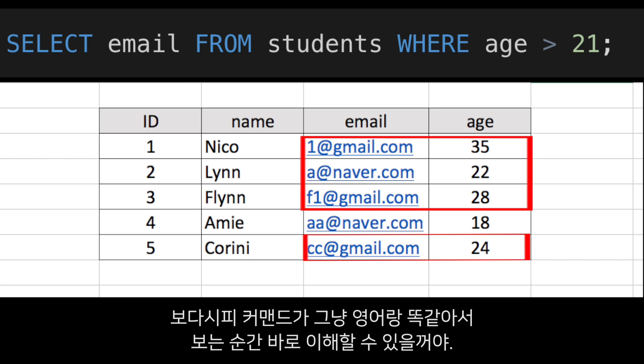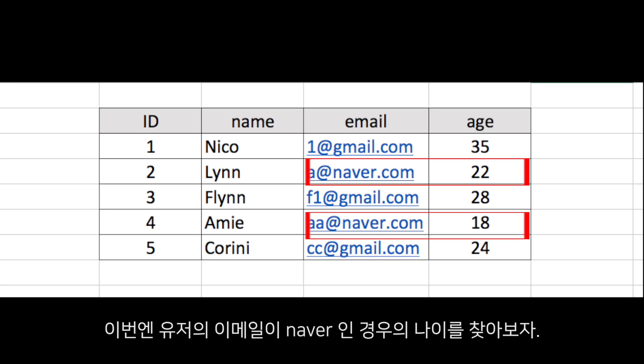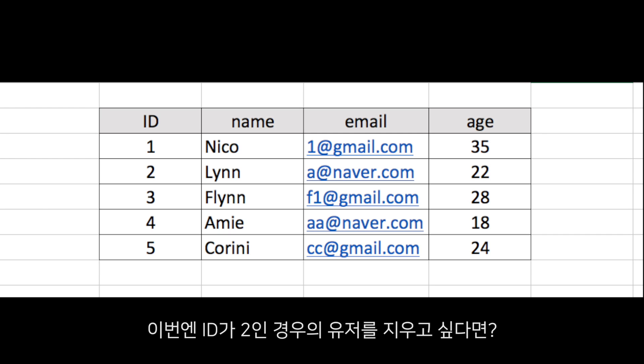This statement looks really much like normal English — we can just read it and understand what's going on. Now let's get the ages of users whose email ends with 'neighbor.com'. We write: SELECT age FROM students WHERE email LIKE '%neighbor.com'. The percentage sign means we are looking for something that ends with 'neighbor.com'.